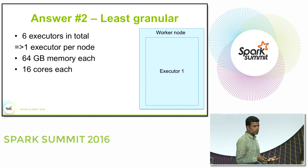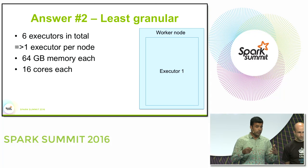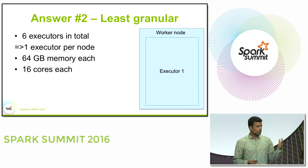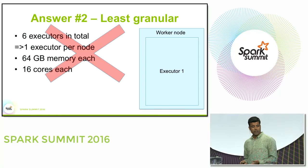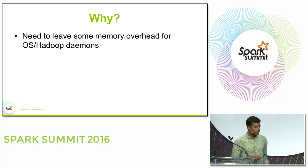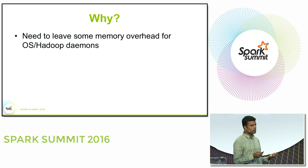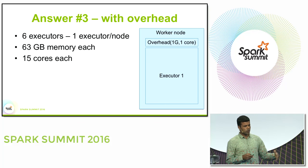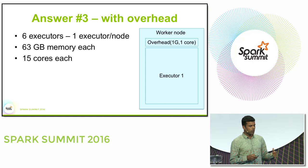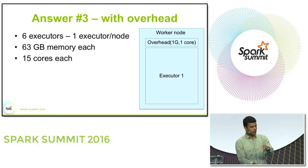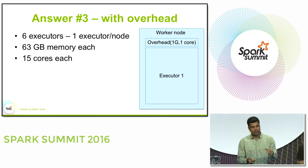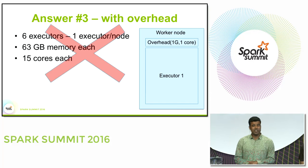The other extreme is the least granular approach — one big executor per node, giving it all memory and all cores. That's also wrong, because you need to leave some overhead for the OS and Hadoop daemons to run. So you leave out one core per node and one gig of RAM, giving 15 cores and 63 gigs per executor. That's still wrong.